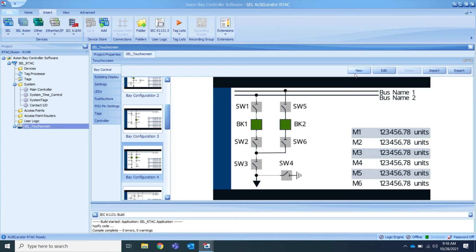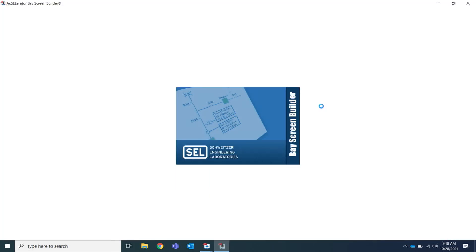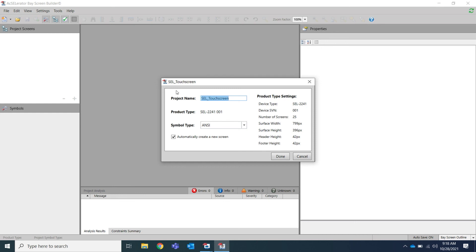To do this, in the Bay Control tab, I press the New button. Pressing the New button opens up our BayScreen Builder software where I have the ability to rename the project or update the symbol type. For this example, I will leave these as default.